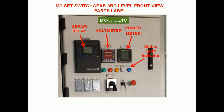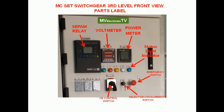This is the status light indicator — we can check the status of the breaker, whether it is open, closed, or tripped. This is the emergency switch; if there is an abnormality you can trip the breaker by pushing it. There is also a key selector switch: if you want to operate this cubicle from a PLC or control room, put it in remote position; for local operation, put it in local. This is the CB control switch — you can use it to switch on or trip the breaker.